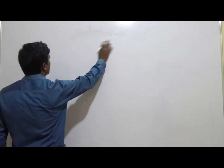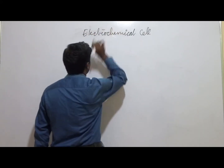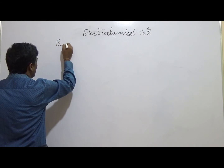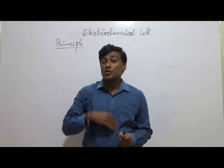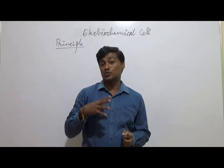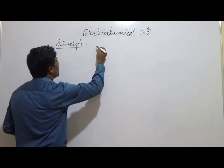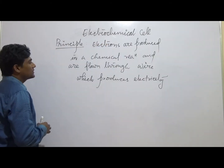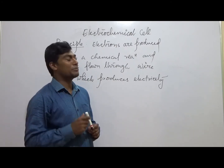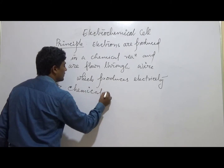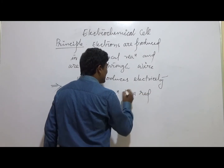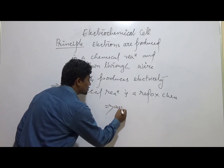Good morning everybody. Today we'll discuss about electrochemical cells. The principle is that a chemical reaction produces electrons which flow through a wire, due to which electricity is produced. The chemical reaction involved is a redox chemical reaction — specifically, an indirect redox chemical reaction.